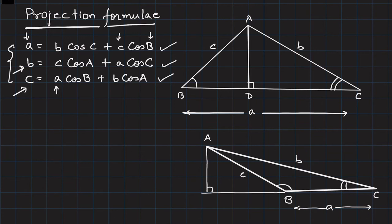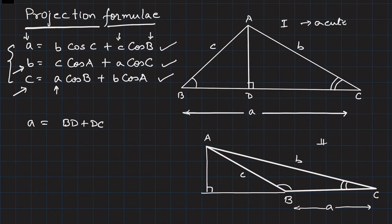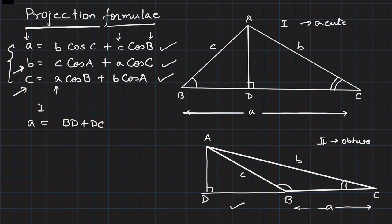Now for the proof. I can write a = BD + DC. There are two cases: Case 1 is an acute triangle, and Case 2 is an obtuse triangle. In both cases the formula should work. I have dropped a perpendicular AD on BC — in the obtuse case it falls on BC extended — and AD is perpendicular to BC.